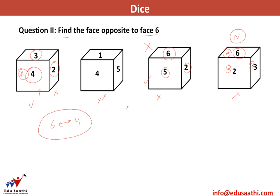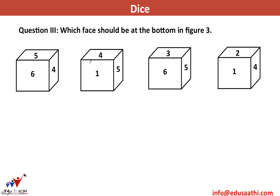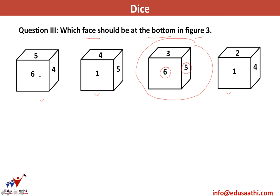Practice question three: which face should be at the bottom in figure three? This means which face is opposite to face number three. Face three has adjacent faces six and five. I look at the other figures — figure one has six and five common. This makes it easy: face four is opposite to face number three. That is all on dice. Just remember these four concepts and you'll be through.